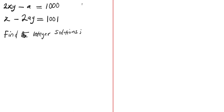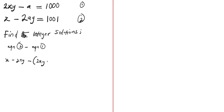Let this be equation 1 and let this be equation 2. The next step is to subtract equation 1 from equation 2. So equation 2 minus equation 1 gives us: x minus 2ay minus (2xy minus a) equals 1001 minus 1000, which gives us negative 2xy plus a on the left side, equaling 1.